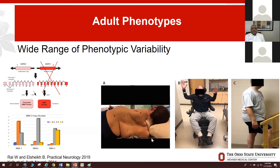The phenotype in the adult clinic is variable, but there are three distinct types based on function at the time of evaluation. First, the non-sitters — a severe non-ambulatory phenotype with severe weakness in all four extremities, previously classified as SMA type 1 or type 2. They tend to have involvement of the facial muscles, swallowing problems, as well as breathing problems.